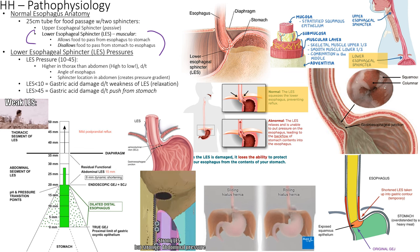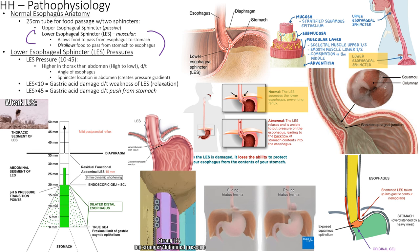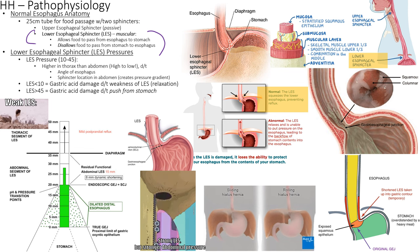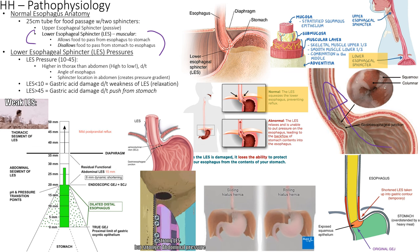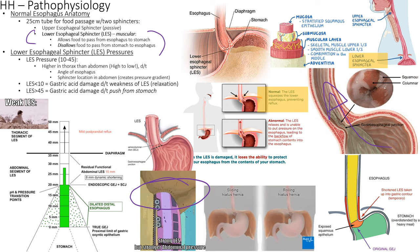The LES can weaken with age, smoking, calcium channel blockers, and other factors. Increased intra-abdominal pressure — from obesity, pregnancy, or heavy lifting — can also push the stomach through the hiatus. Either a weakened sphincter or too much abdominal pressure can cause a hiatal hernia. These are the two main mechanisms.